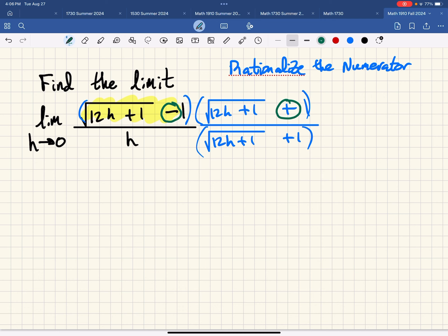Okay so what happens when we do that? Well, if we did a FOIL process on the top and otherwise multiply two binomials then we would have in the first term the radical would be eliminated and we would just have 12h plus 1.